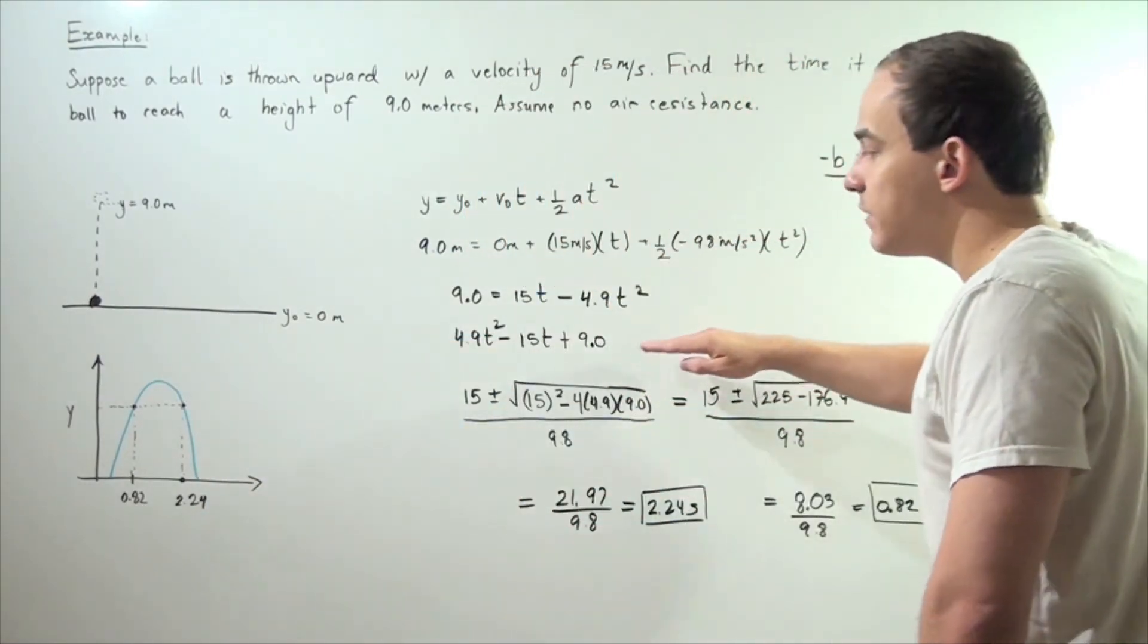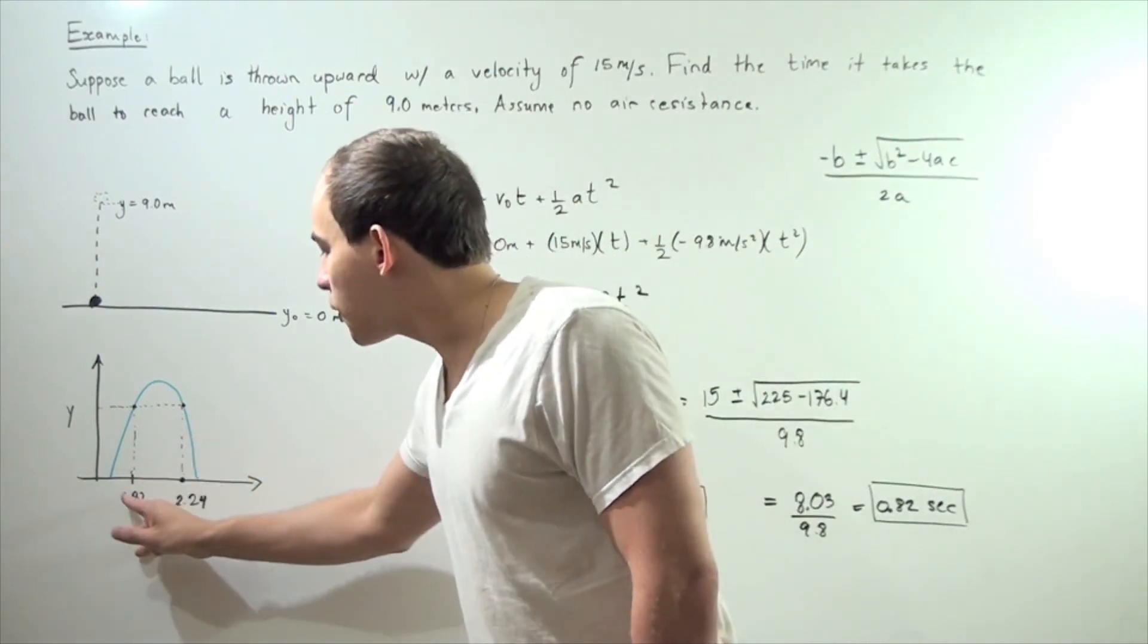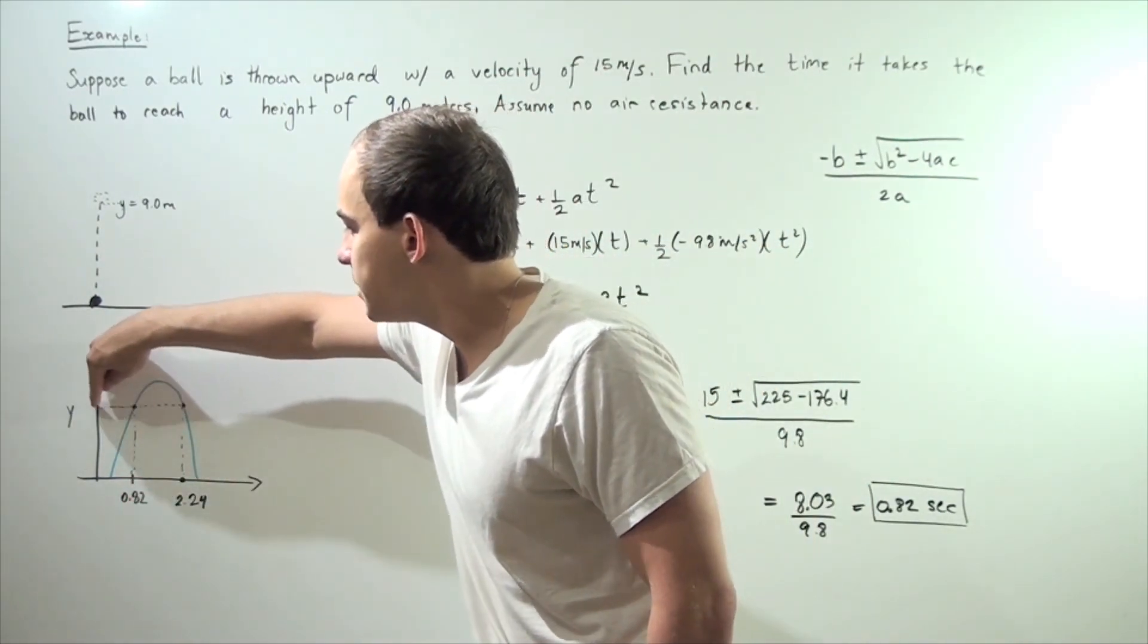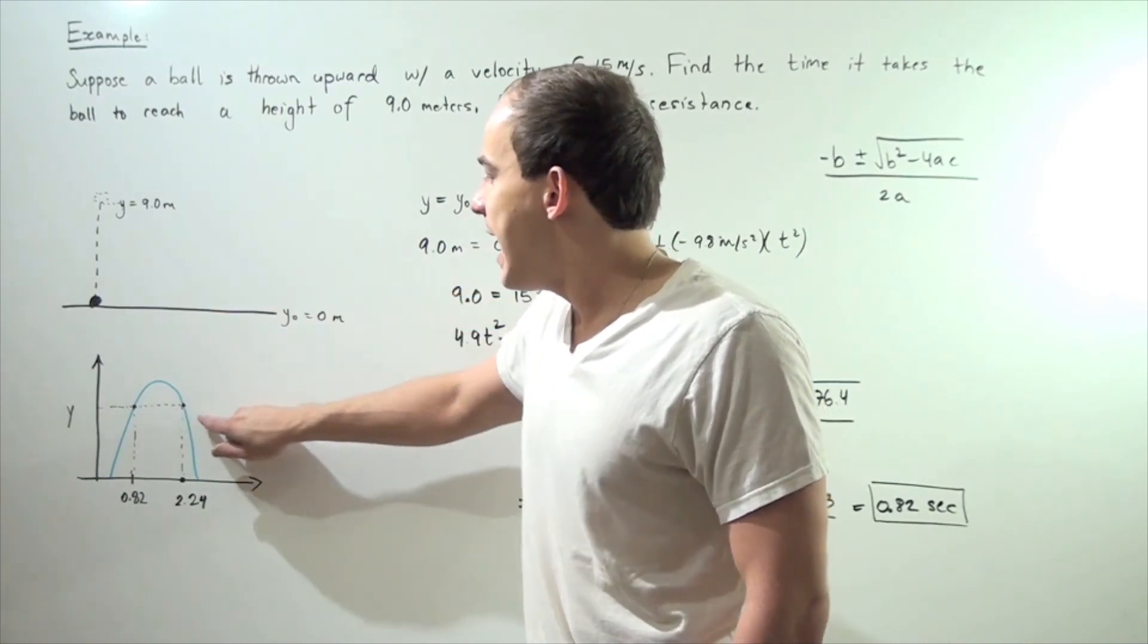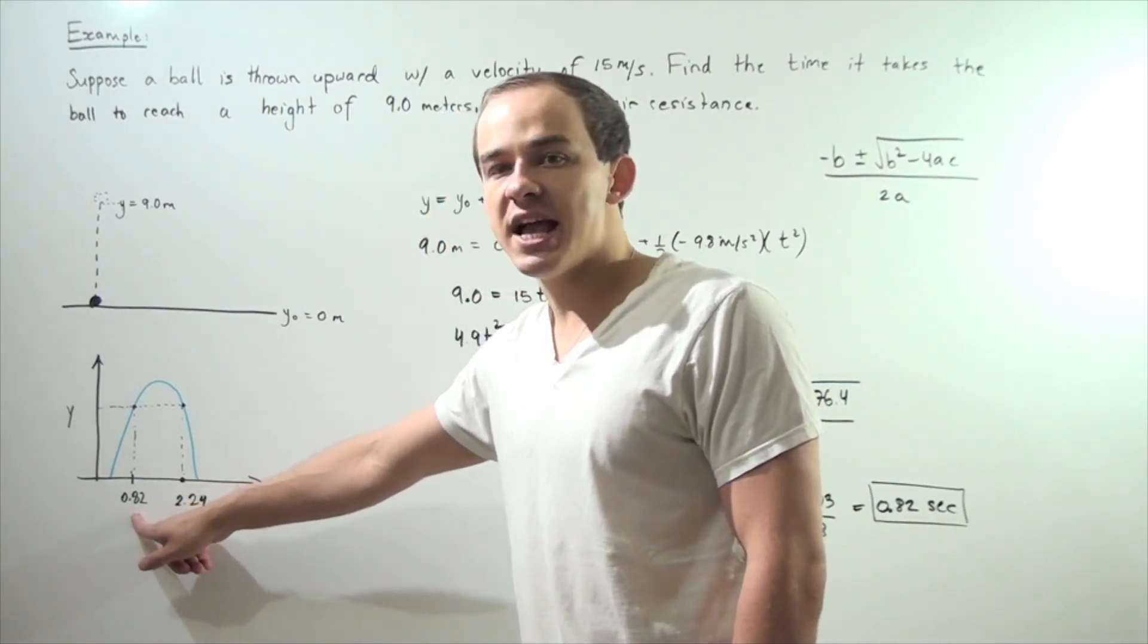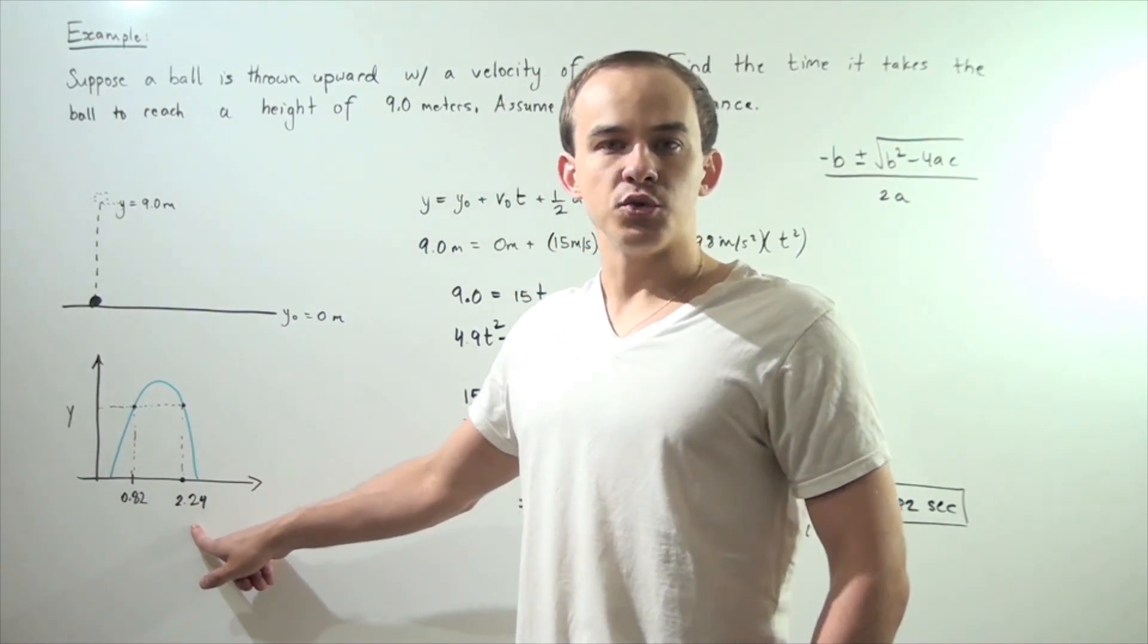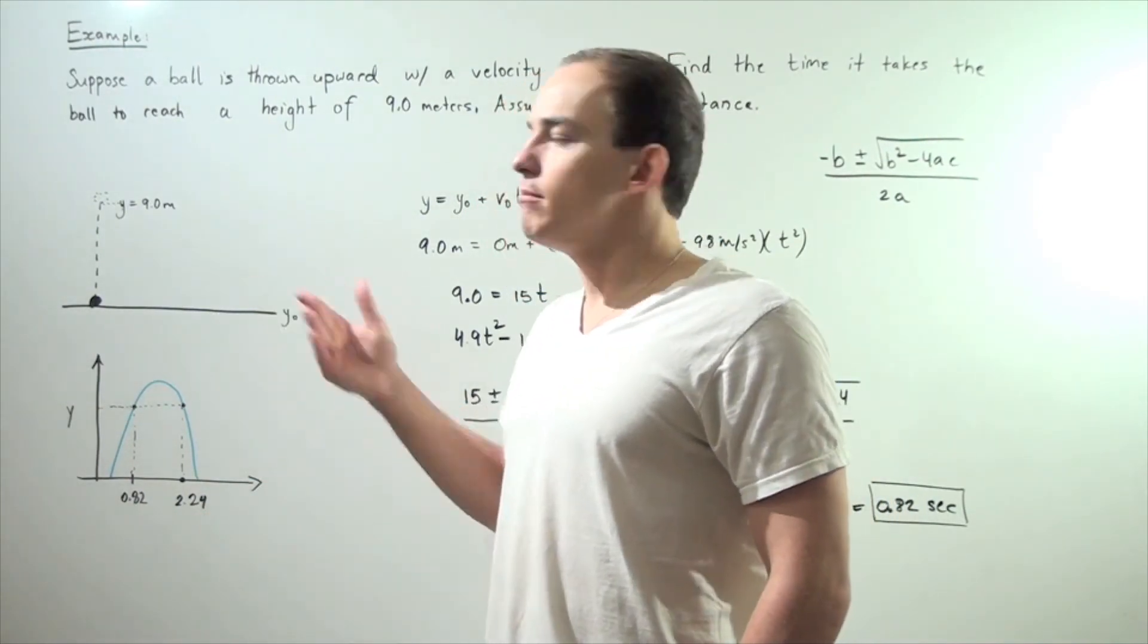Because we have a quadratic equation. The first value represents the value when it passes our 9 meter mark shown with this dashed line, and the second one is shown here. So 0.82 seconds and 2.24 seconds. It passes that 9 meter mark twice.